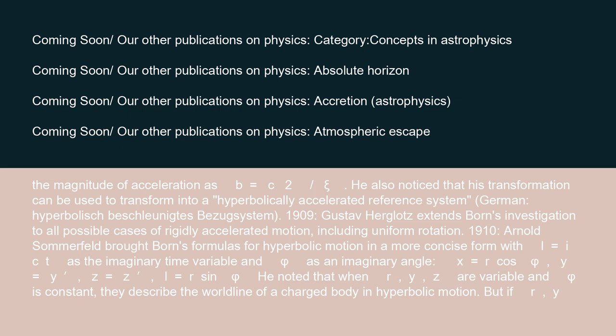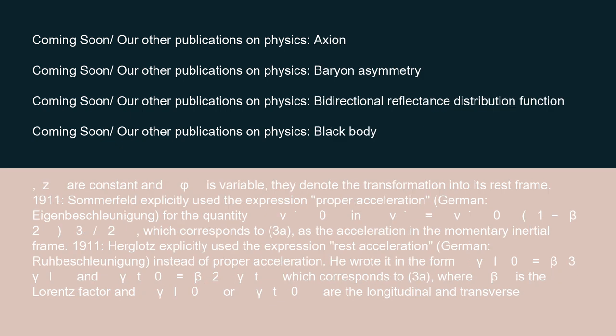1910: Arnold Sommerfeld brought Born's formulas for hyperbolic motion into a more concise form, with L equals ict as the imaginary time variable, and phi as an imaginary angle: x equals r·cos(phi), y equals y, z equals z, L equals r·sin(phi). He noted that when r, y, z are variable and phi is constant, they describe the world line of a charged body in hyperbolic motion; but if r, y, z are constant and phi is variable, they denote the transformation into its rest frame.